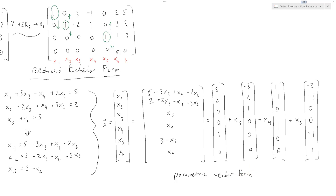Overall, we've taken a system of equations and replaced it with another system with the same solution set. The new form makes many desirable properties of the system easy to find, and also makes the solution set easy to write. There are very many applications of row reduction, so it's a good idea to practice it. After some practice, the row operations become much easier to perform and the whole procedure becomes easier.